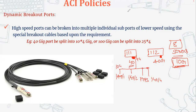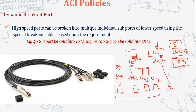So this single port will be converted into four 10G ports. Similarly, we will do the same for switch 112. These four ports will be connected to four servers here. The single side of the cable goes into the ACI switch port, let's say port 49, and these four ports will be connected to four different servers.